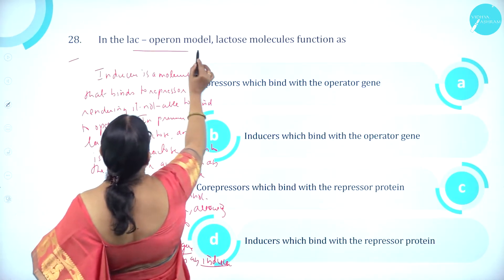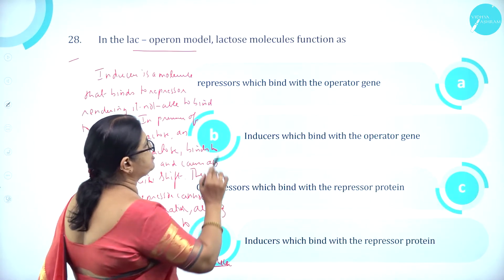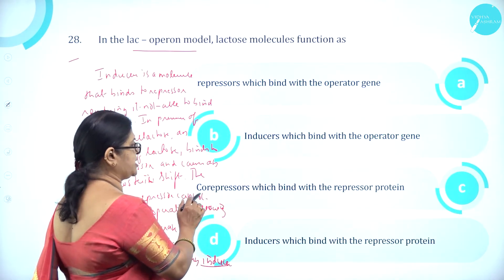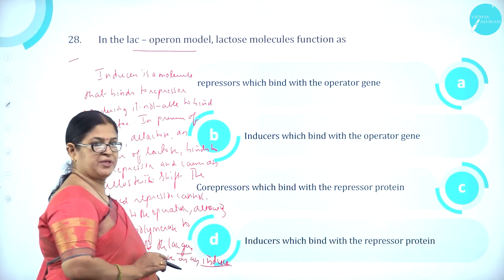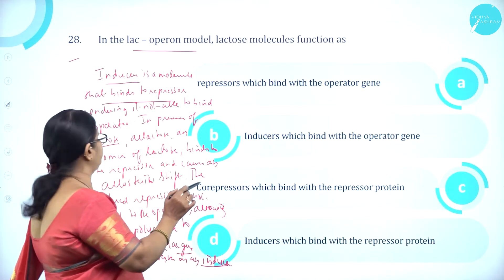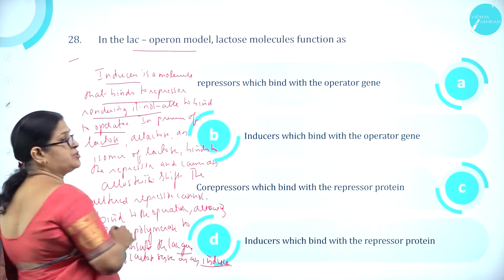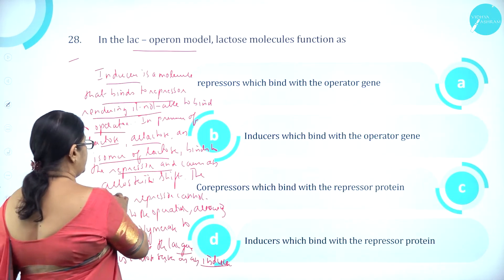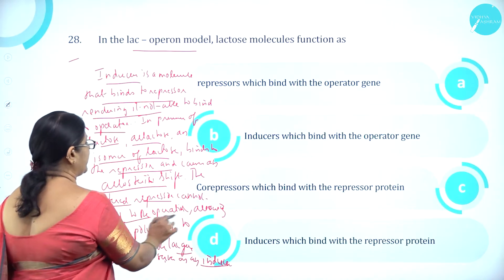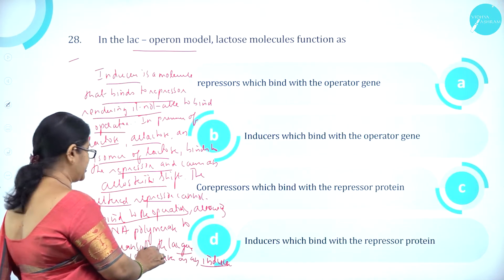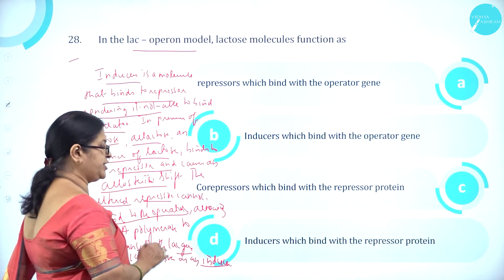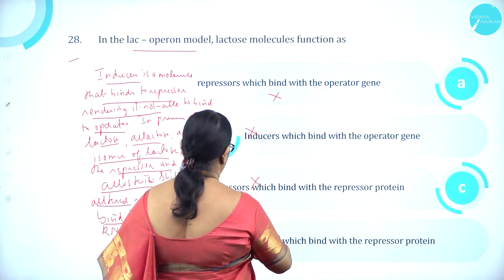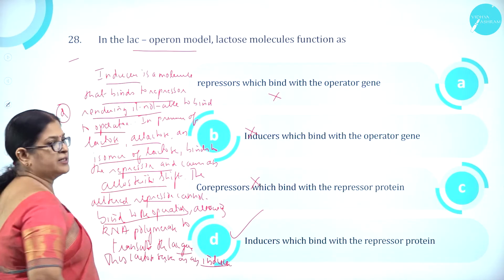Moving on to question number 28. In the lac operon model, lactose molecules function as: option A repressors which bind with the operator gene, option B inducers which bind with the operator gene, option C co-repressors which bind with the repressor protein, option D inducers which bind with the repressor protein. In the presence of lactose, allolactose — an isomer of lactose — binds to the repressor and causes an allosteric shift, so the altered repressor cannot bind to the operator, allowing RNA polymerase to transcribe the lac gene. Thus lactose serves as an inducer binding the repressor protein. Option D is correct.